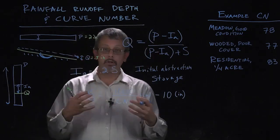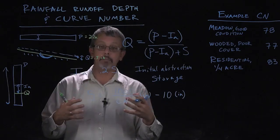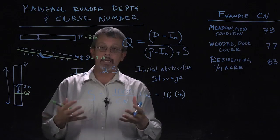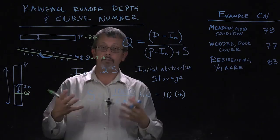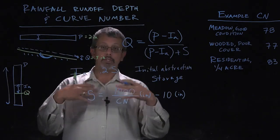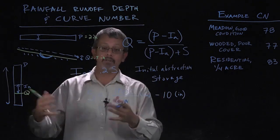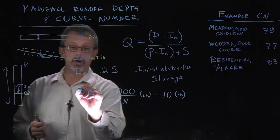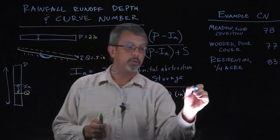This is a somewhat empirical relationship. This is a relationship that's been made by observing how much water flows off of a number of different surfaces in both experimental laboratory settings and in field settings.